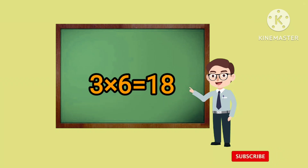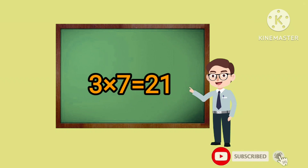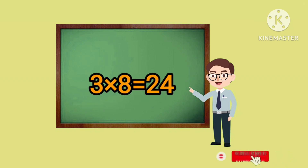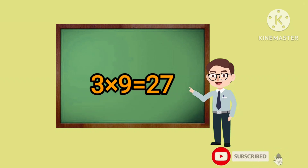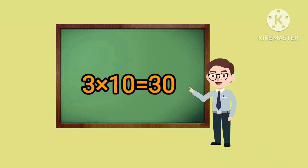Three, seven's a twenty-one. Three, eight's a twenty-four. Three, nine's a twenty-seven. Three, ten's a thirty.